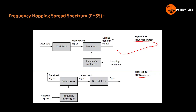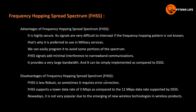On the receiver side, the hopping sequence and frequency synthesizer are used to demodulate the signal. The demodulated data is then separated from the received signals. Digital data and analog data are differentiated at the output.